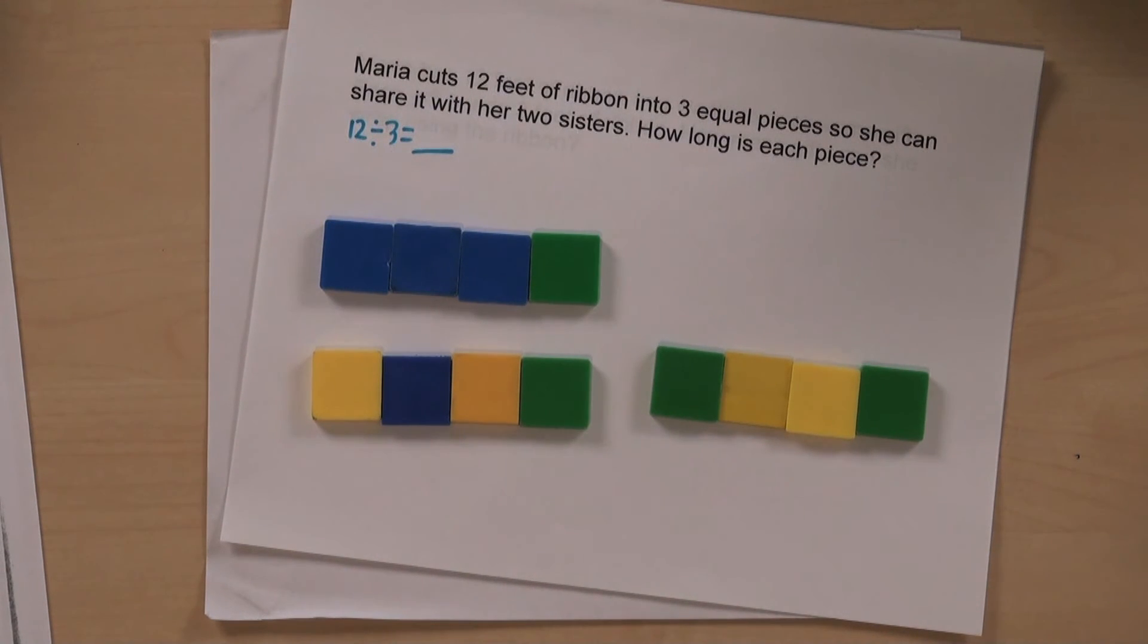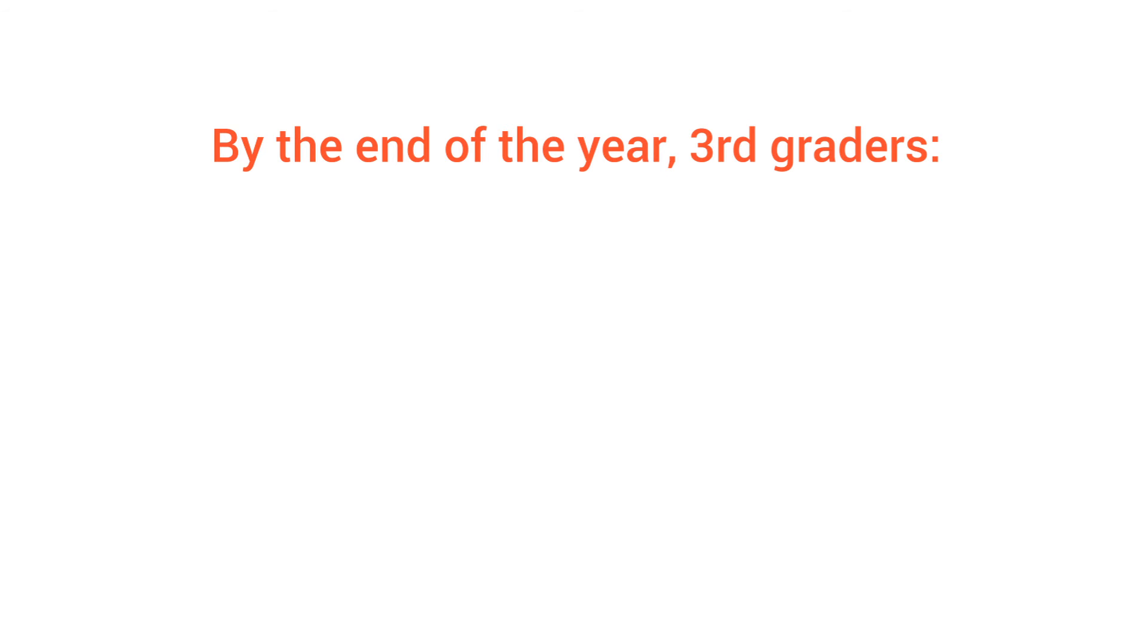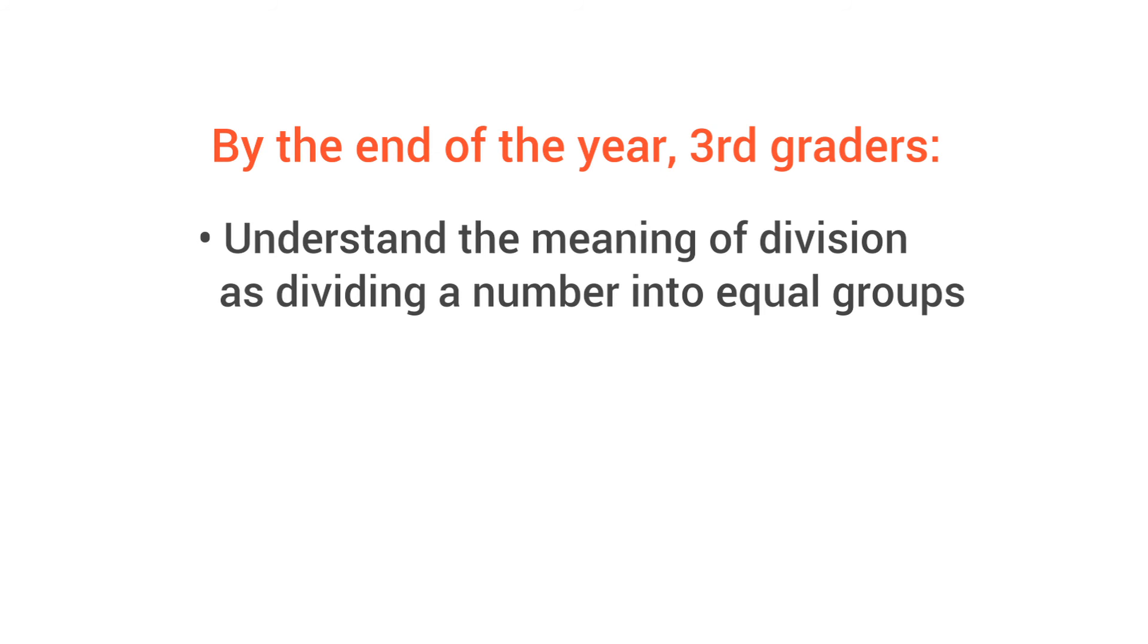So how do you know that your child's on track? Well, by the end of the year, third graders understand the meaning of division as dividing a number into equal groups.